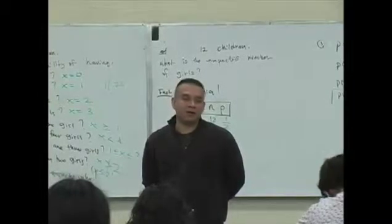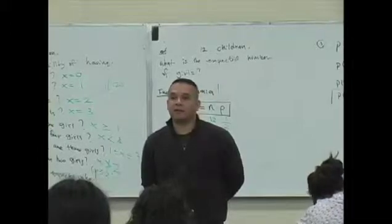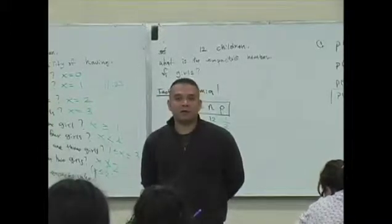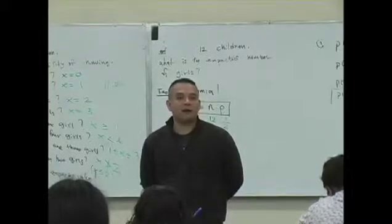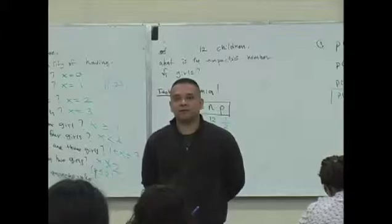Okay, so all the couples in the world that have 12 children, if you counted how many girls each one had, the average is going to be six. Long-run average expected value. It tells you what to expect. About half your kids are going to be one sex versus the other. Does that even make sense? Exactly.